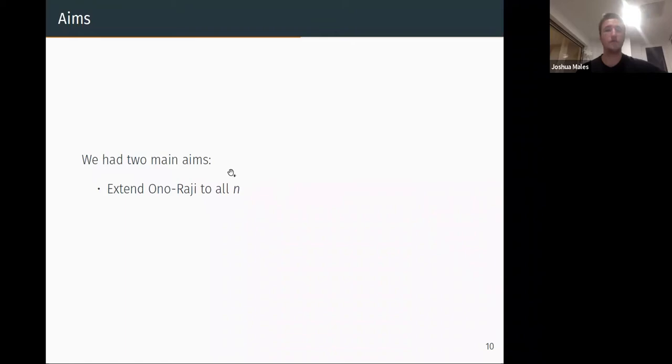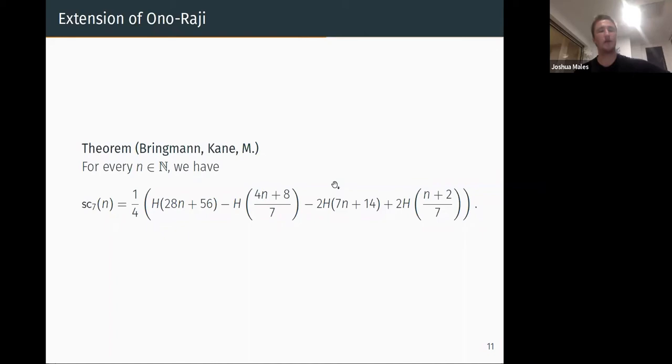So what did we show? Like I said, we had two main aims. First, extend Ono-Raji to all n, so it doesn't have to be positive or doesn't have to be not 5 mod 7. And also want to provide some explanation for this curious identity. On the one hand, Ono-Sze was proved with combinatorial structures and there's a lot of structure behind that. Ono-Raji, like I said, was only proved using generating functions and modular forms. So we want some more explanation for this identity.